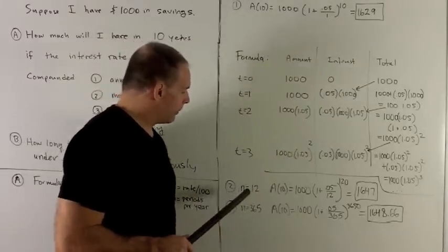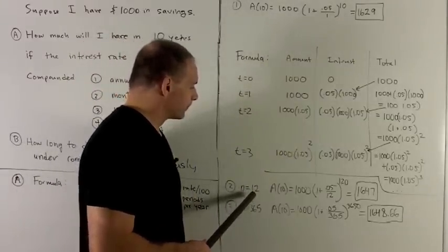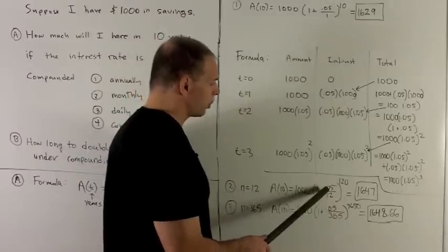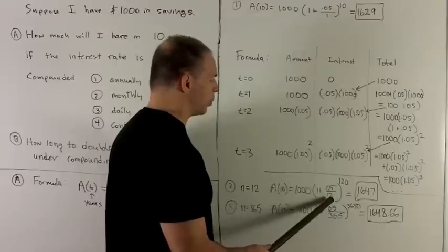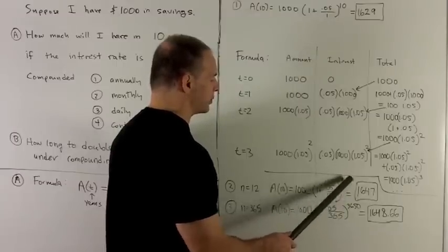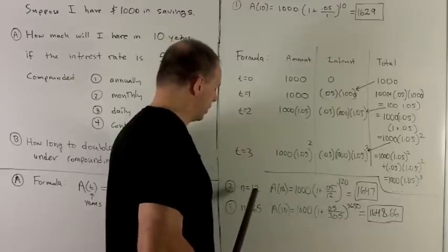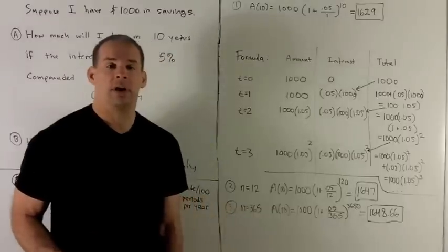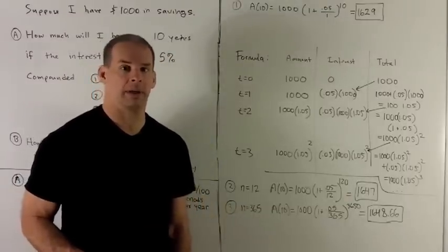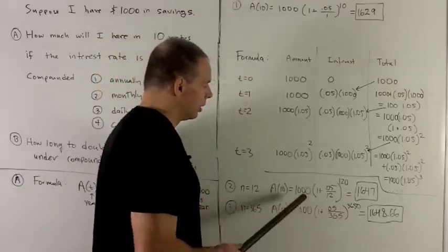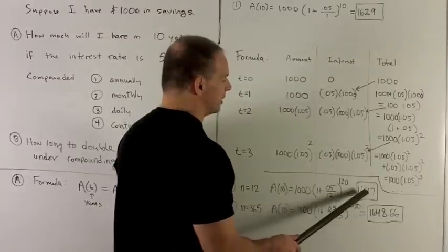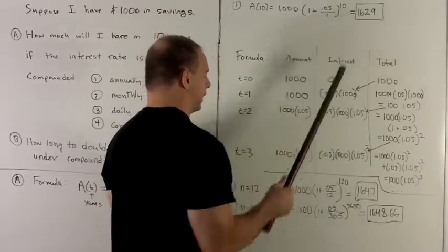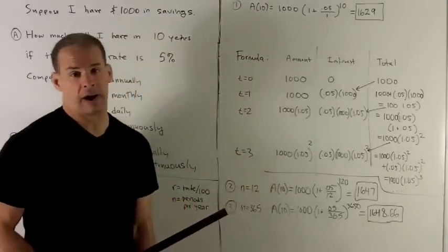We go to monthly compounding. In 10 years, the initial amount stays the same. We're going to take our 0.05 now and divide by 12. And then the number of compounding periods is going to be, we compound 12 times a year, and it's going to be over 10 years. So we'll have a total of 120 compounding periods. Put this in the calculator, and I get 1647. And we note we're actually making more money if I compound monthly over annually.